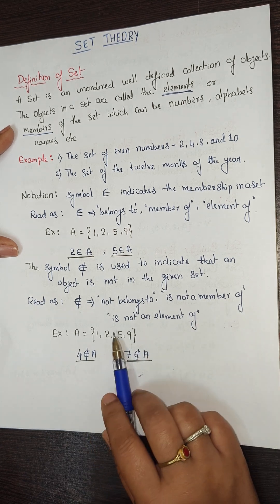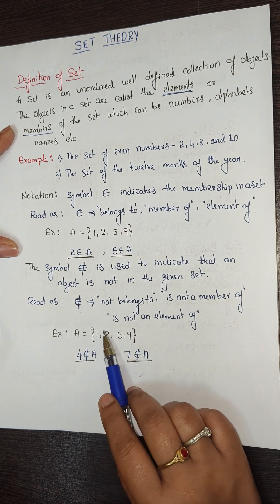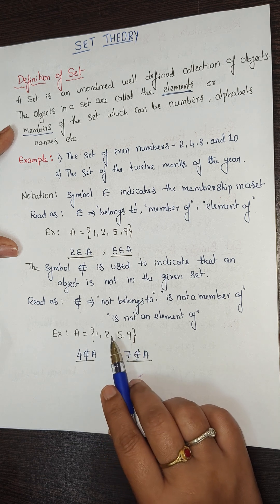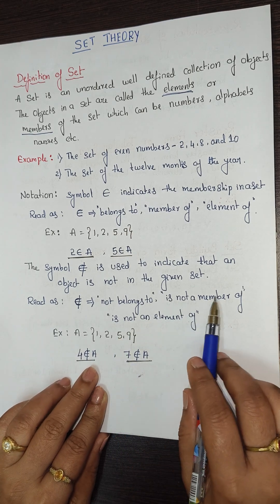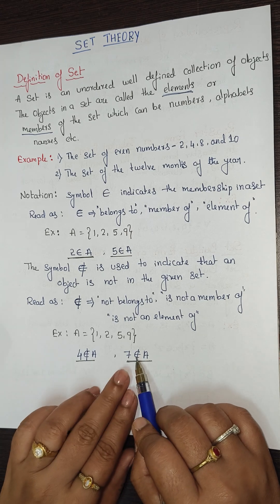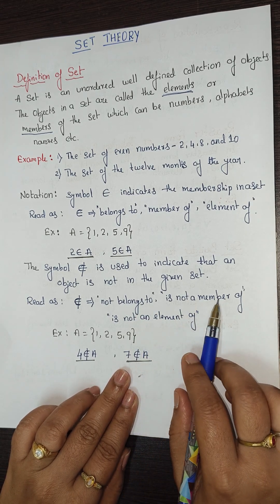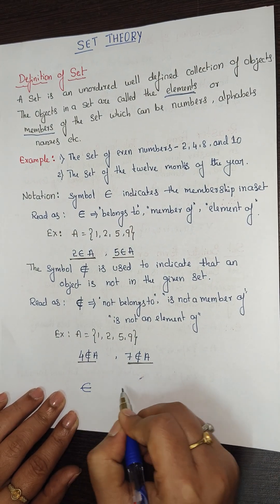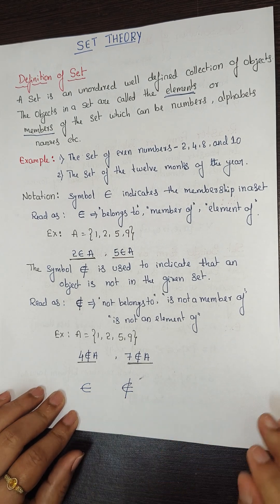For example, if A = {1, 2, 5, 9}, then 2 belongs to A, 5 belongs to A, 1 belongs to A, 9 belongs to A. But 4 does not belong to A — A contains only the four elements 1, 2, 5, 9. Similarly, 7 is not a member of A and is not an element of A.